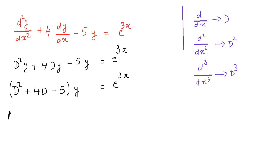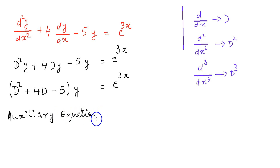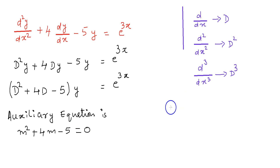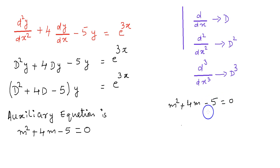To find the complementary function, we need to find the auxiliary equation of D squared plus 4D minus 5 equal to 0. For finding the auxiliary equation, we only need to substitute a variable instead of D. Here we are using m, so we get the auxiliary equation as m squared plus 4m minus 5 equal to 0.